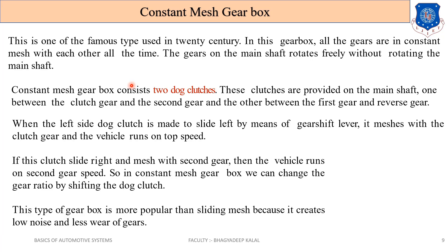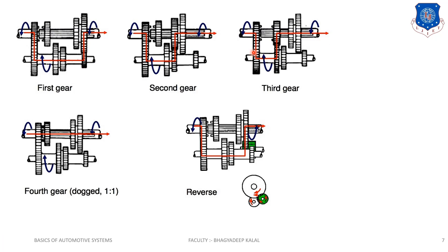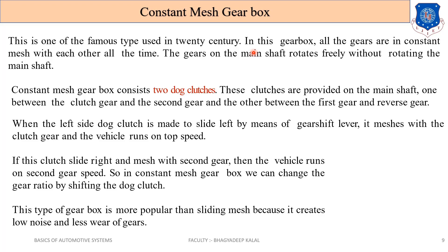The constant mesh gearbox was one of the famous types used in the 20th century. In this gearbox, all the gears are in constant mesh with each other. In the previous sliding mesh type, gears were not constantly meshed — they were slid over the spline shaft to engage. But in the constant mesh gearbox, gears are constantly in contact. The gears on the main shaft rotate freely without rotating the main shaft by providing bushes and bearings. This gearbox consists of two dog clutches on the main shaft — one between the clutch gear and second gear, and the other between the first gear and reverse gear.